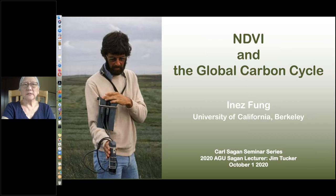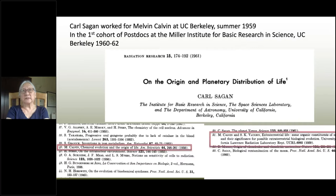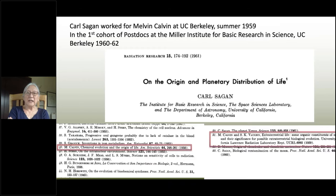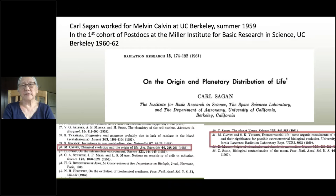Jim Tucker started talking about Carl Sagan. Carl Sagan worked for Melvin Calvin when he was a graduate student. He came to UC Berkeley and was also a postdoc there. I've included here his paper while he was a postdoc on the origin and planetary distribution of life — so it's not just Carl Sagan doing the 'billions of billions of stars,' but on life. In the paper, he referenced Melvin Calvin, and all of you know the Calvin cycle of photosynthesis.